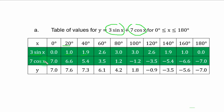Then you come to 7 cos s. You check cos 0, that is 1 times 7, you have 7. You check cos 20 degrees, multiply it by 7, you have 6.6 to 1 decimal place. You check cos 140 degrees, multiply it by 7, you have 5.4. You check cos 180 degrees, you have minus 1. Minus 1 times 7, you have minus 7. You can check for others. After that, you add, because you have to add in the given function.